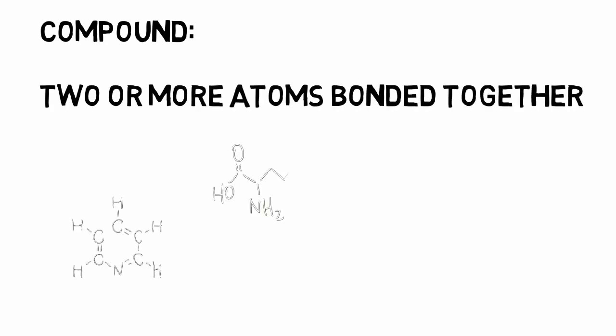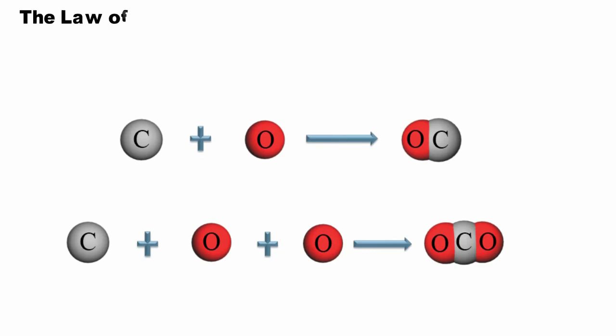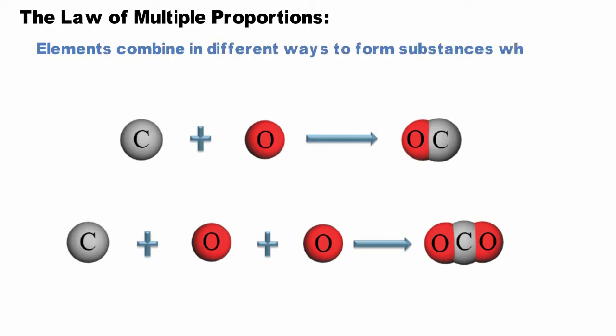A compound is two or more atoms of different types bonded together. The law of multiple proportions proposed by the French chemist Joseph Proust states that elements combine in different ways to form substances whose mass ratios are small whole number multiples of each other.